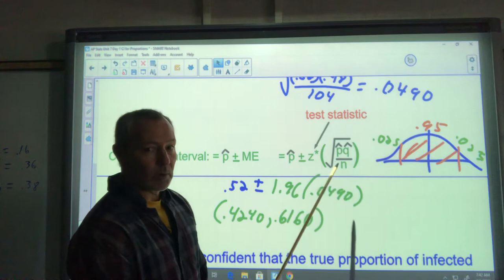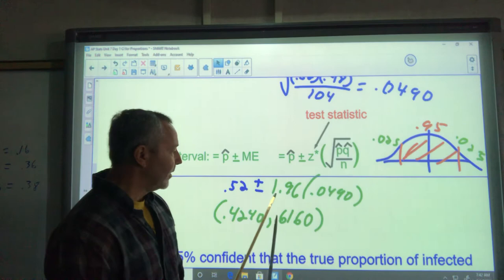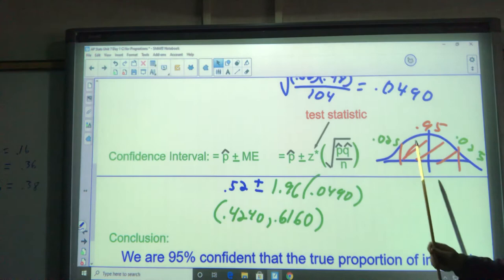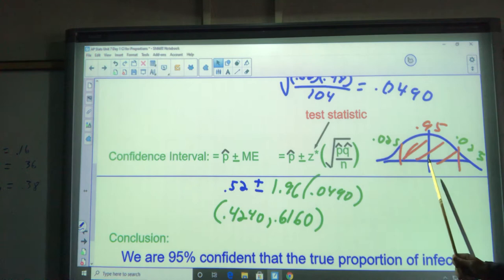Our margin of error here consists of our Z score and then our standard deviation calculation, or in other words, our standard error here. That's 0.0490. We calculated that. This is our Z score. How did we get that? We have an interval. We have all the possibilities that we could get with our samples here. And what we want is 95% in there.